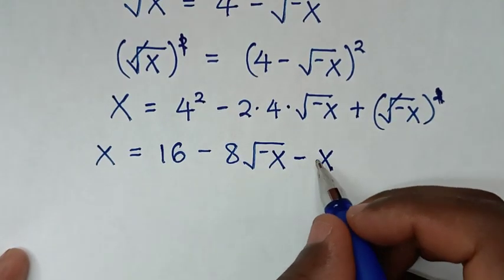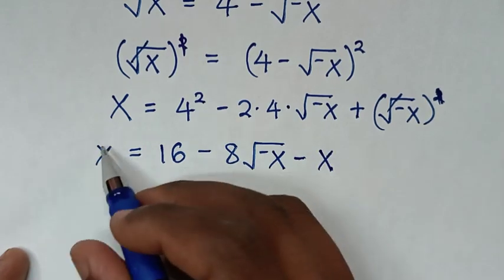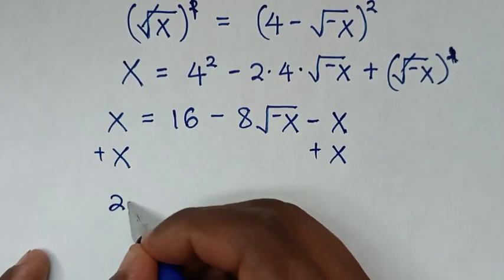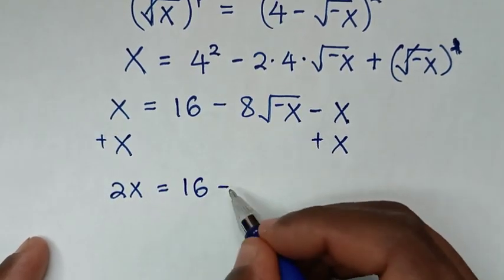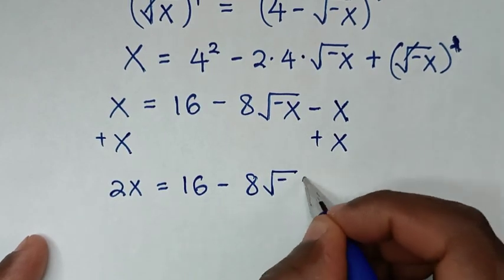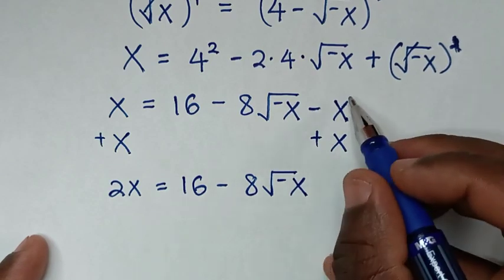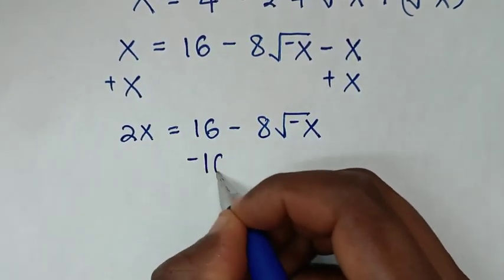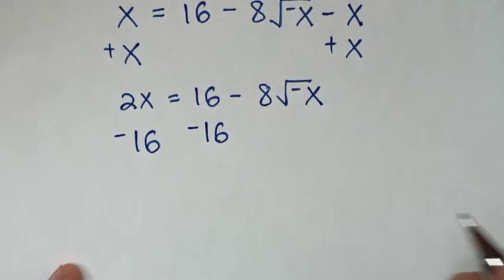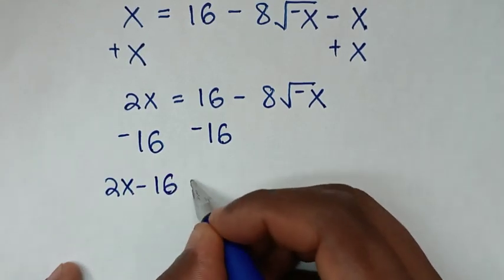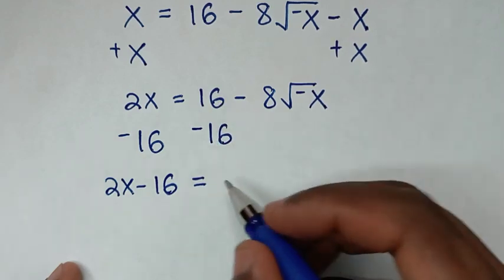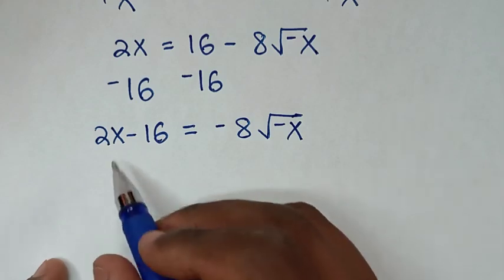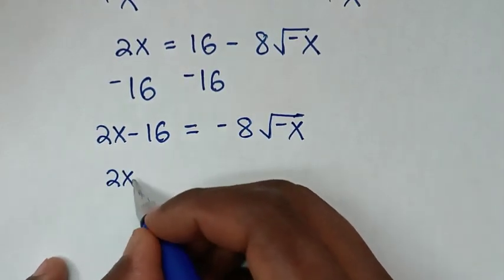We have negative x on the right and positive x on the left, so we add x to both sides. x plus x gives 2x, equal to 16 minus 8 times square root of negative x. The negative x and positive x cancel. Then we subtract 16 from both sides, giving 2x minus 16 is equal to negative 8 times square root of negative x.